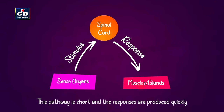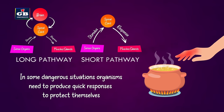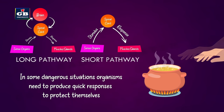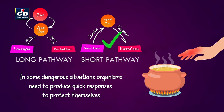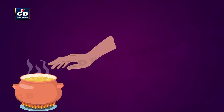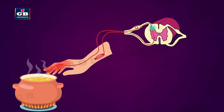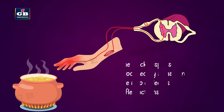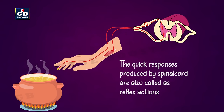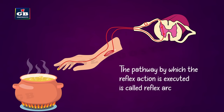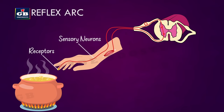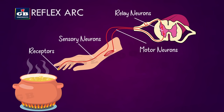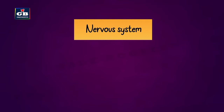In the short pathway, information about the stimuli passes to the spinal cord where it is processed quickly and responses are produced. In dangerous situations, organisms need very quick responses, so they take this short pathway. These quick responses are called reflex actions, and the pathway by which a reflex action is executed is called the reflex arc. The components of the reflex arc are: receptors, sensory neurons, relay neurons, motor neurons, and effectors.